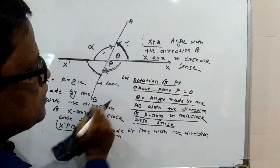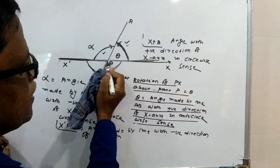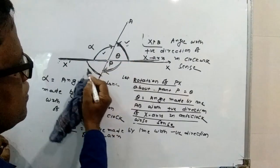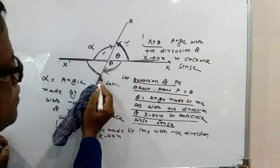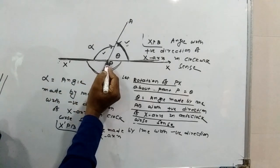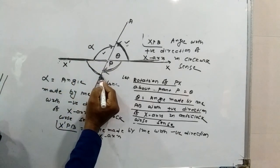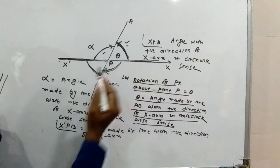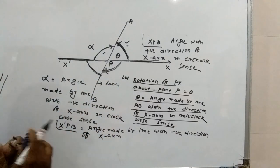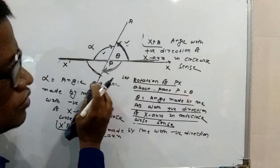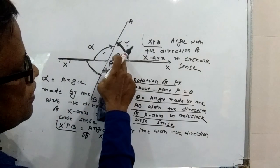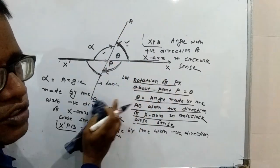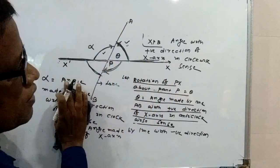Only this angle is the angle of inclination because it satisfies both: positive direction and anticlockwise sense. Both must be satisfied. In one case it is negative direction clockwise sense; in another case it is negative direction anticlockwise sense; in another it is positive direction but clockwise sense. So only theta — angle APX or XAP — is your angle of inclination.